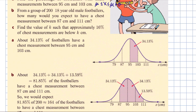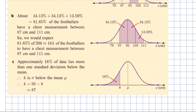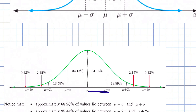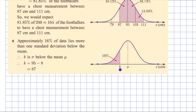The last question asks: find the value of k such that approximately 16% of chest measurements are below k centimetres. Looking at the bell-shaped curve, we need the area to the left to be about 16%. That's been chosen deliberately because 13.59 + 2.15 + 0.13 ≈ 16%. So k must be one standard deviation below the mean — that is, 95 minus 8, so k = 87 cm. These are contrived questions deliberately designed so you can just read values off the diagram.